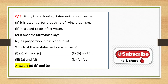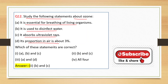Now the last question: Study the following statements about ozone and identify which are correct. Statement A - it is essential for breathing of living organisms - this is wrong. Statement B - it is used to disinfect water - this is correct. Statement C - it absorbs ultraviolet rays - this is also correct. Statement D - its proportion in air is about 3% - this is wrong. So the correct answer is B and C, which corresponds to option 2.